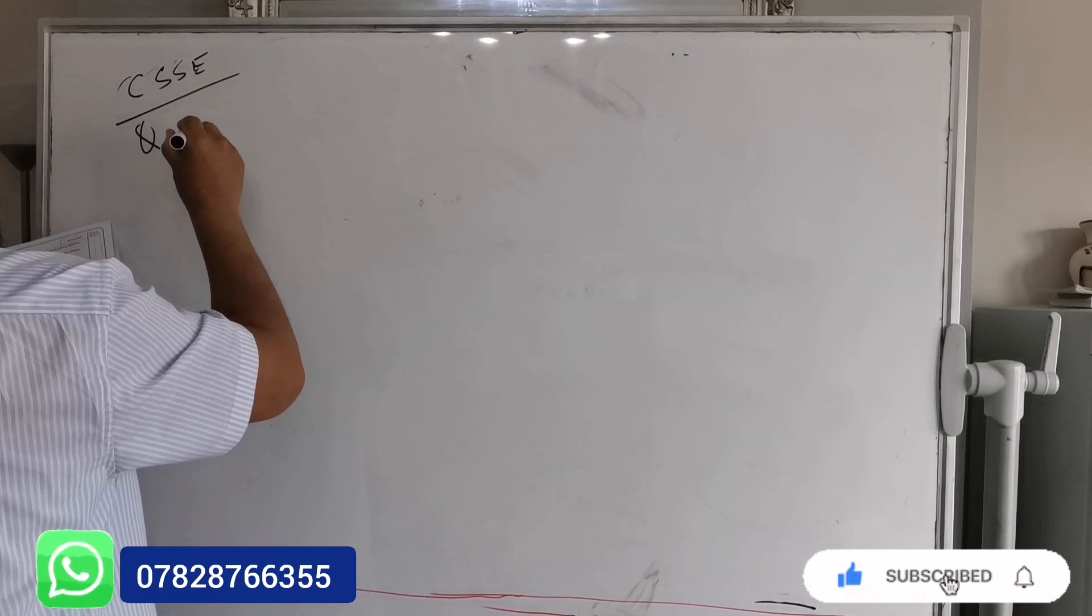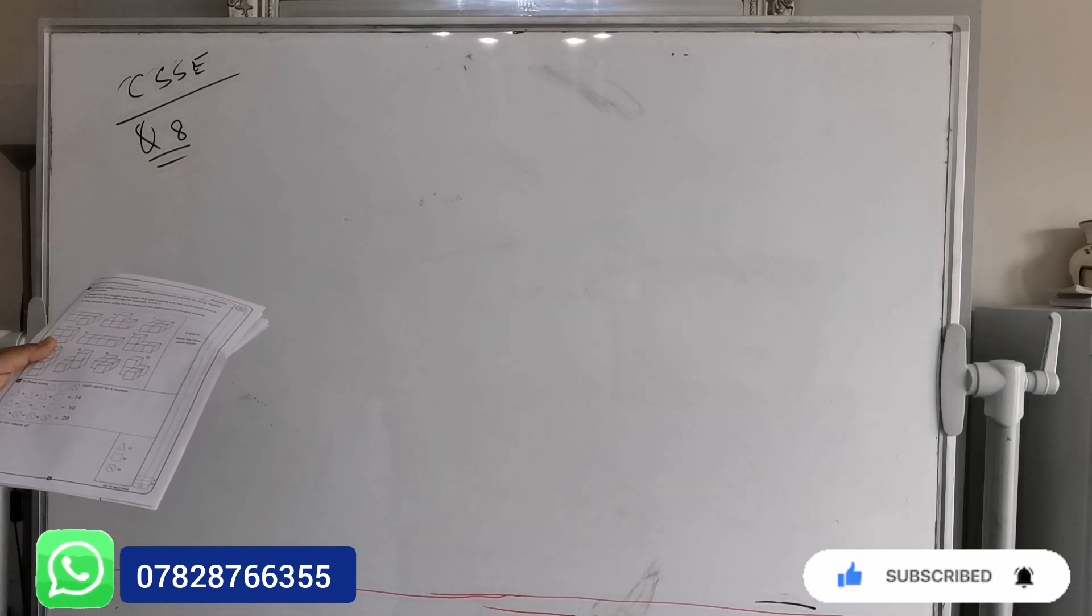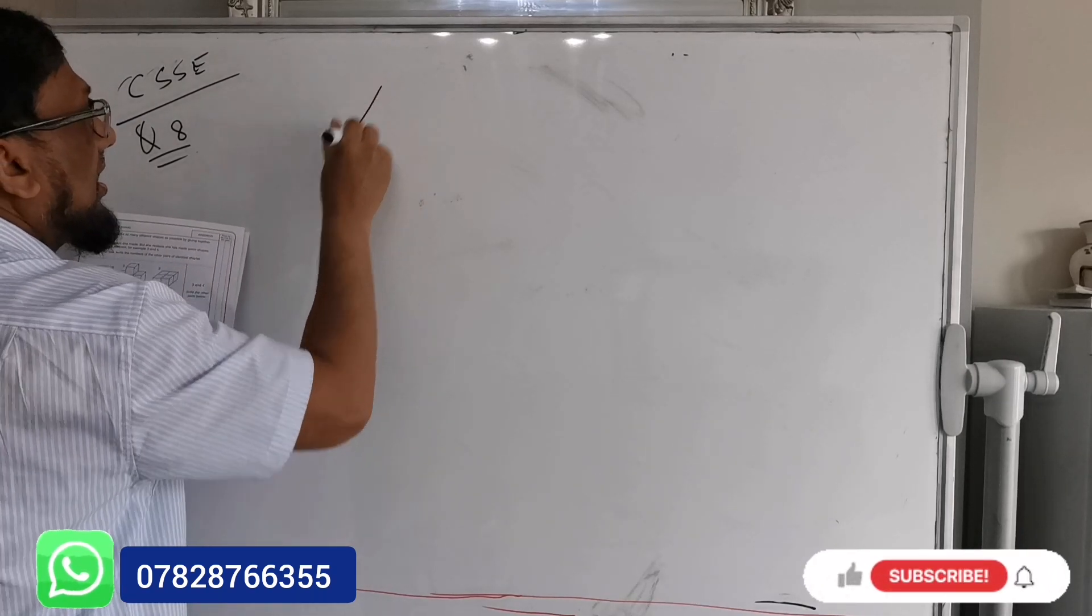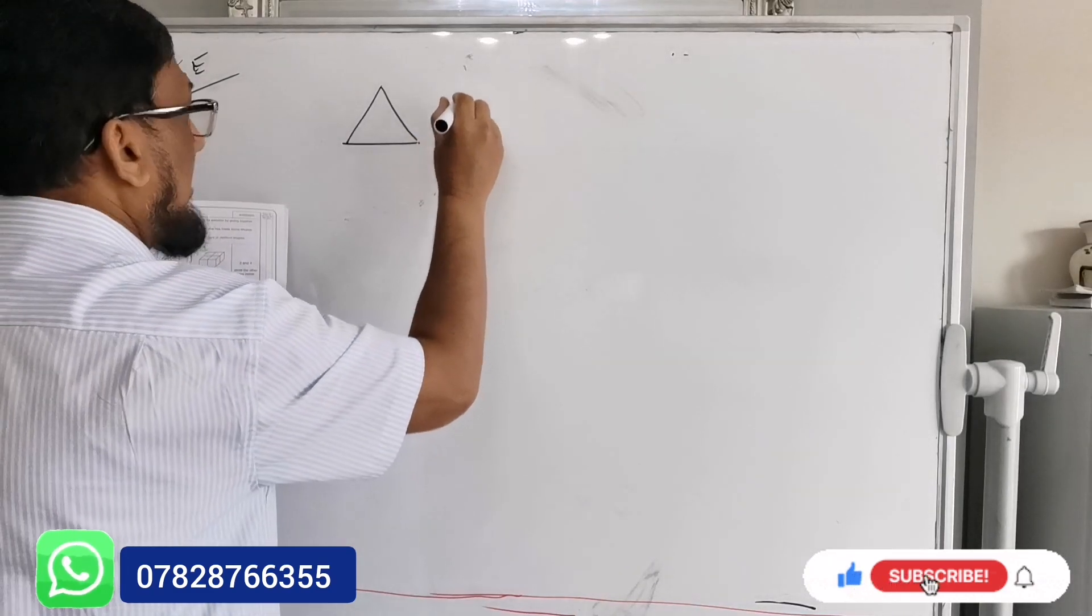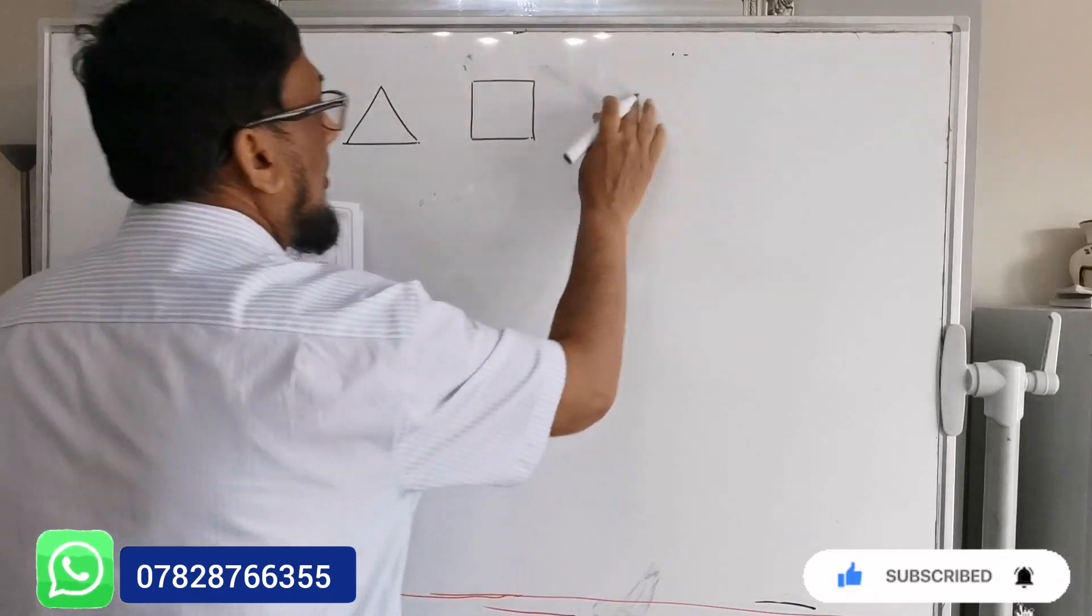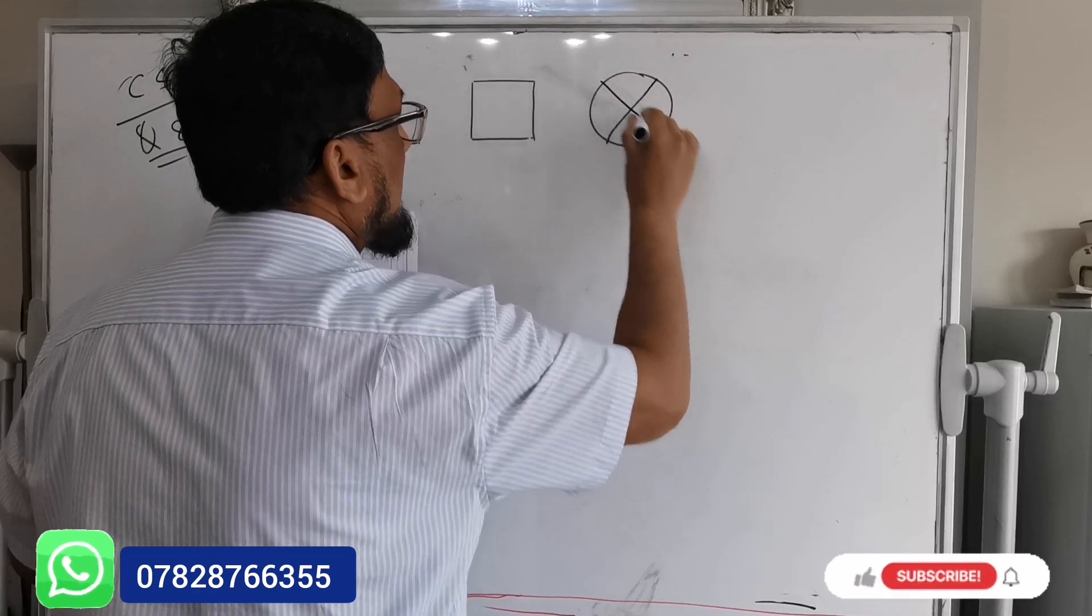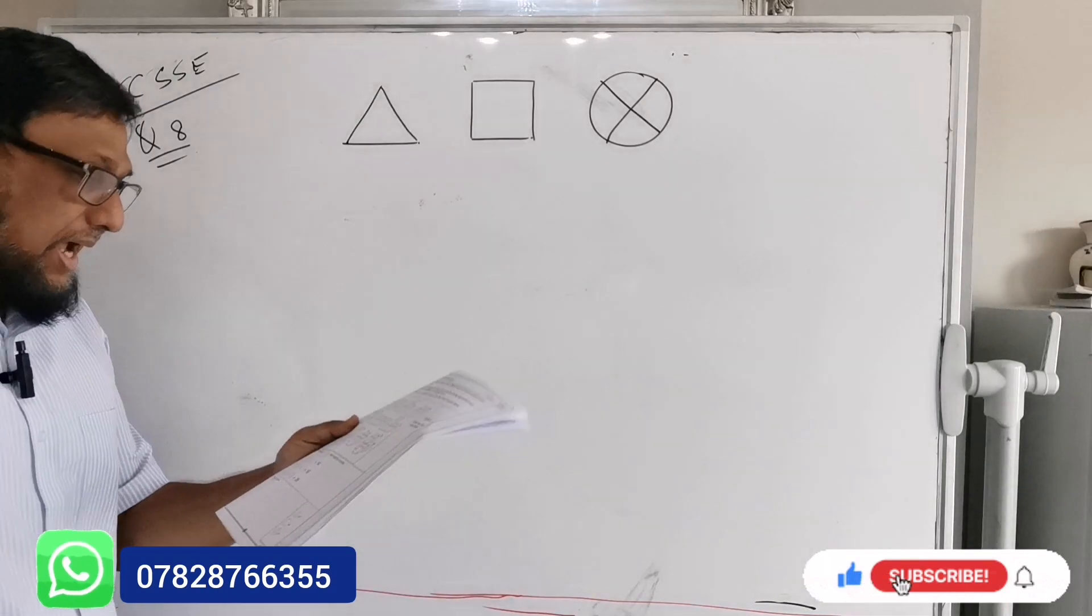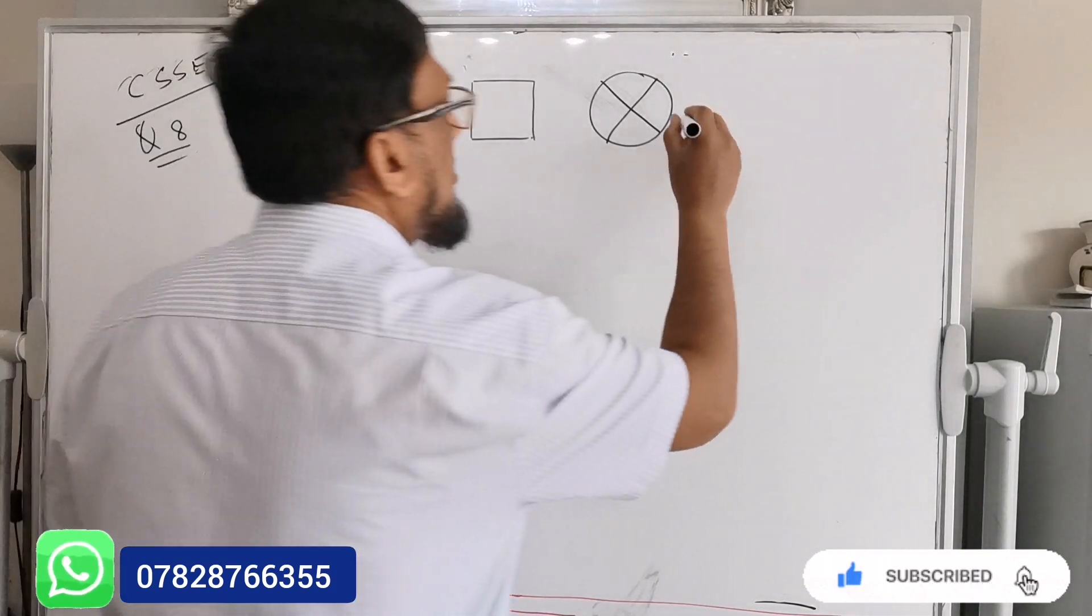Question number eight. They provided a few shapes: this is a triangle, this is a square, and this is a circle. It says each is for a number.